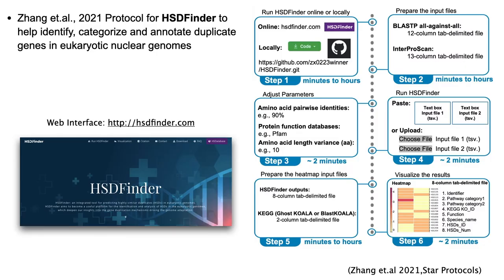For example, here is middle-step work for bioinformatic tools. HSDFinder is designed for identifying HSDs in eukaryotic genomes by using the BLAST package, Pfam domain, and KEGG pathway. We highlighted the steps in a graphical abstract and assisted with examples, which greatly cut down the barrier for first-time users of this tool.